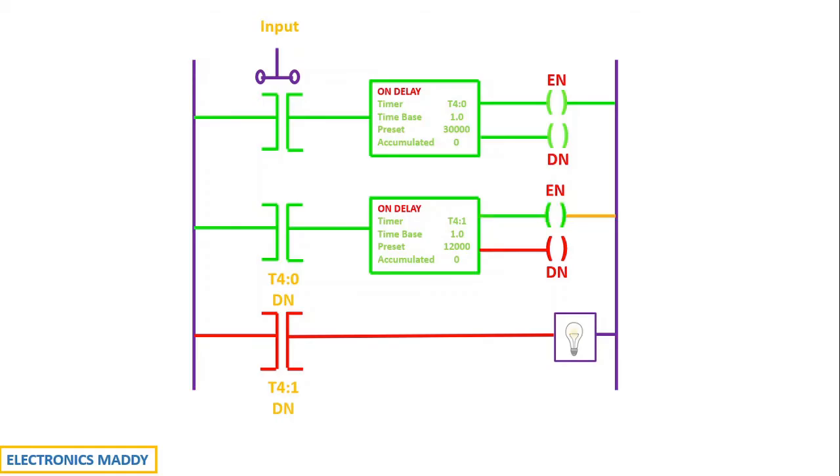Now, the enable bit corresponding to it will go to high state instantly. And the timer starts counting values from one and goes up to 12,000 seconds. Once 12,000 seconds is completed, the done bit goes high and the same done bit address is used over here.